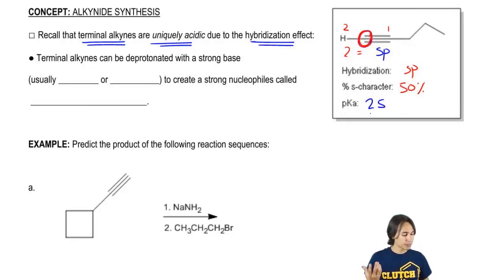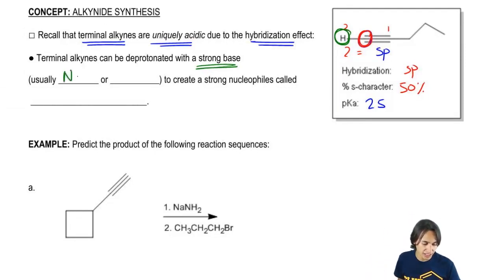Well, it turns out that if we can use a strong enough base, we can pull off this H and give a negative charge to the terminal alkyne. So we're going to use a strong base to deprotonate that H.